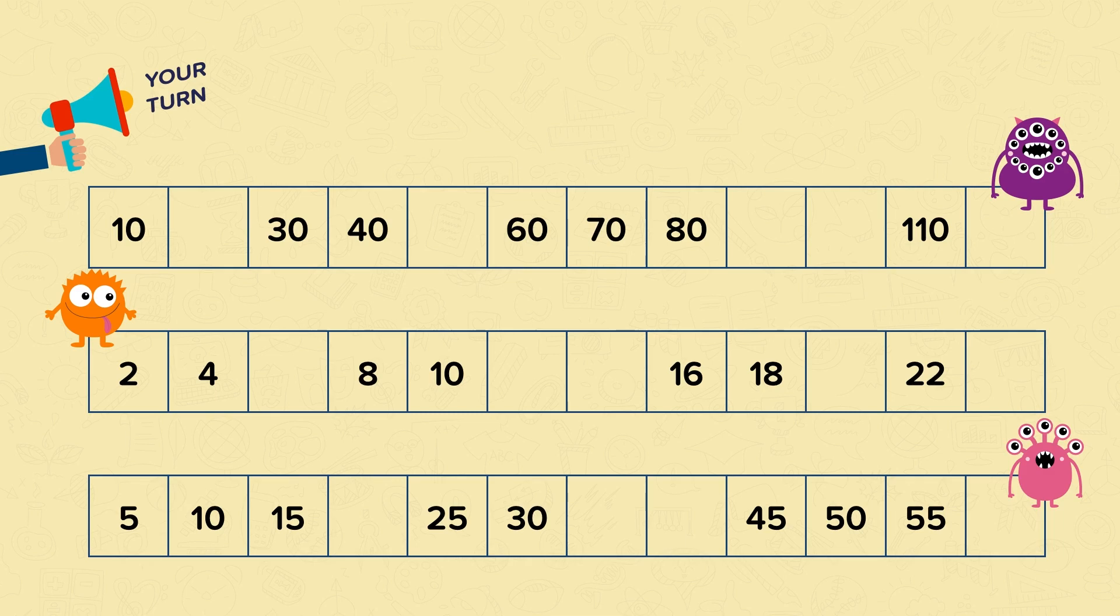Let's go through the answers now. For this first number track you had to count in 10s. Well done if you knew that the missing numbers were 20, 50, 90, 100 and 120.